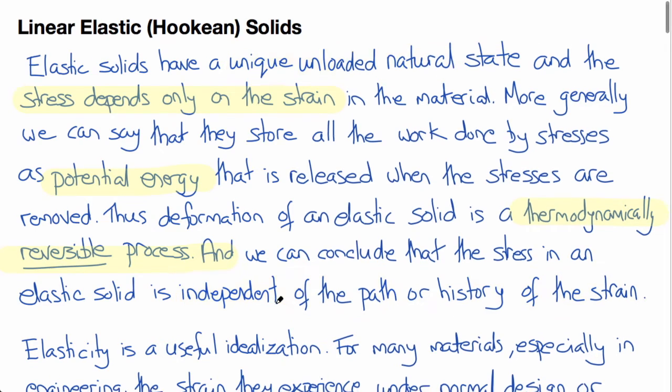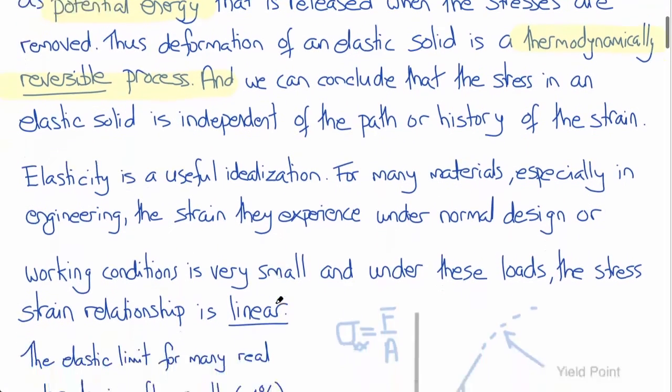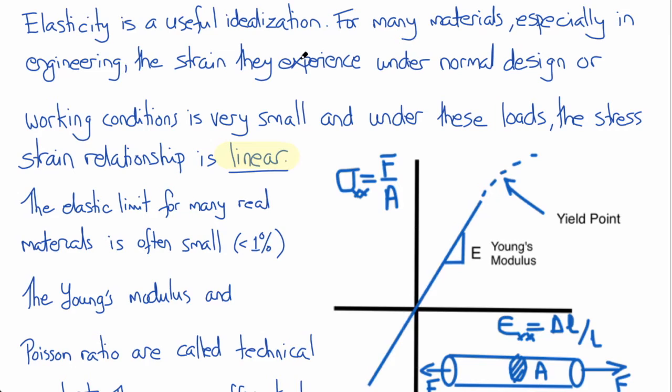Elasticity is a very useful idealization. For many materials, especially engineering materials, the strains that they experience under normal design or working conditions is very low. And so under these low strains, the stress-strain relationship is linear. And we can use the Cauchy infinitesimal strain.